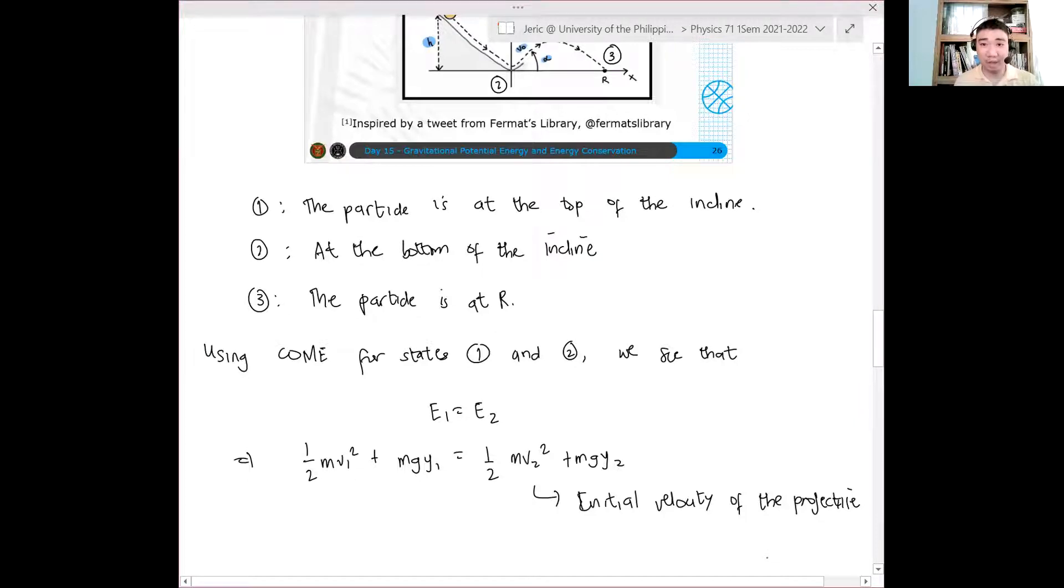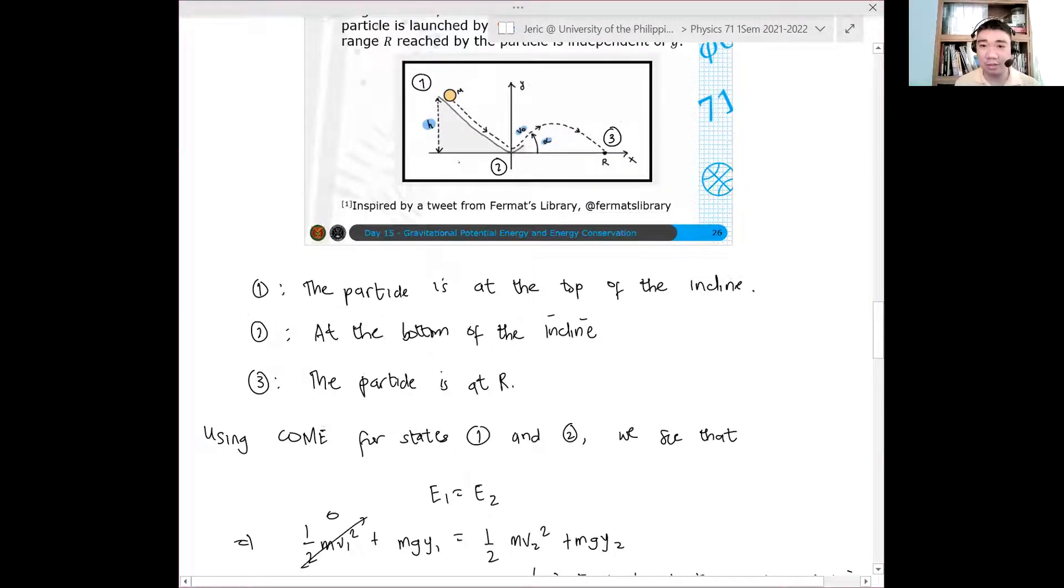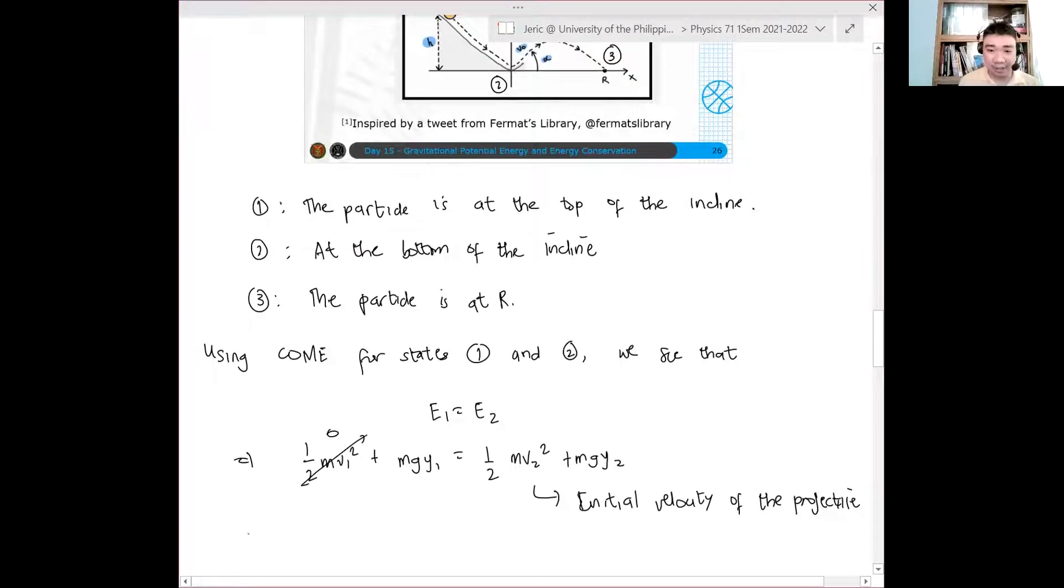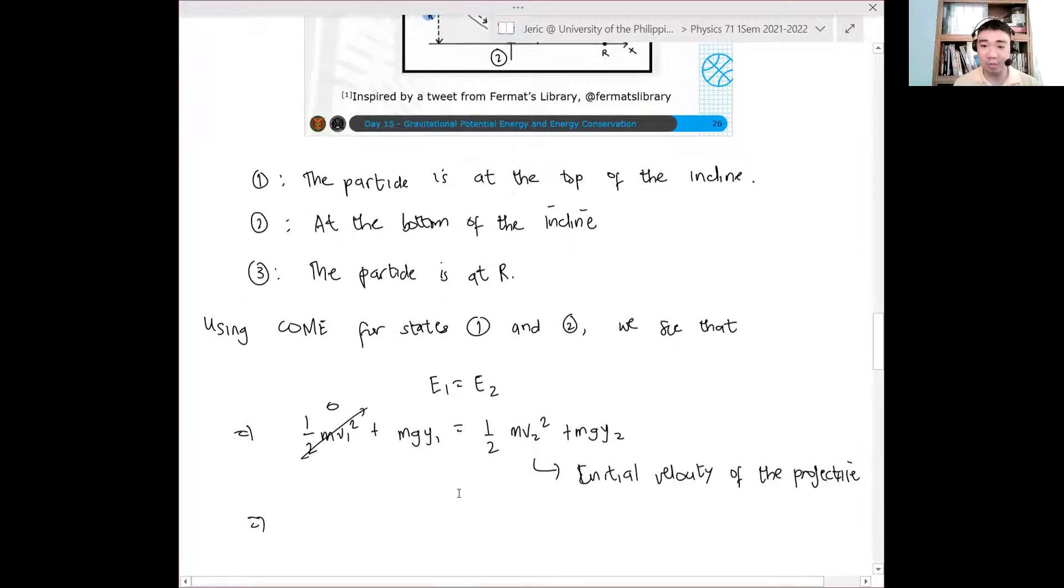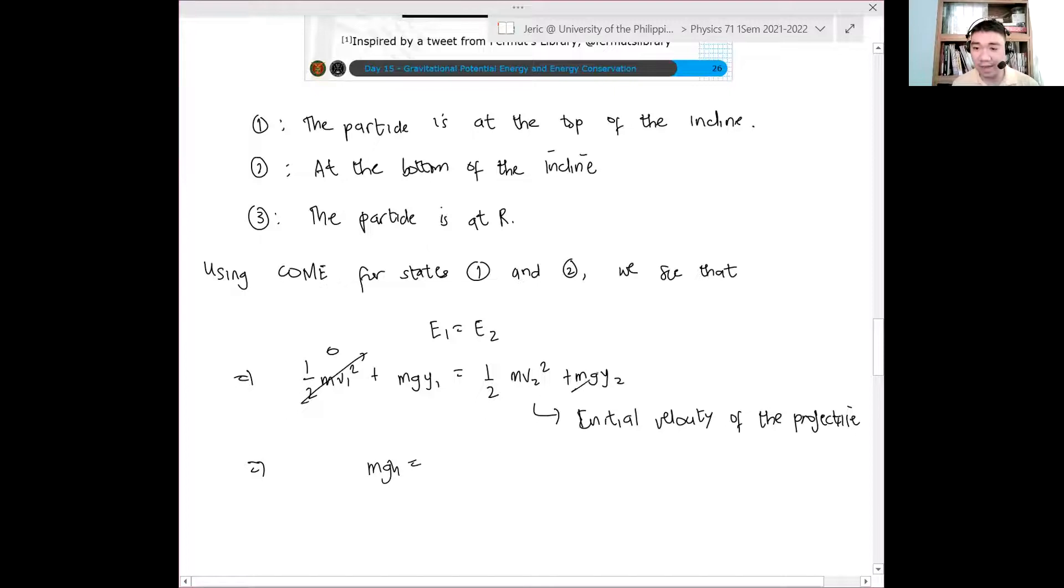So now, what can we say about the initial velocity of the particle? I should say, the velocity of the particle at the top of the incline initially. Gumagalaw ba siya at the top of the incline initially? Obviously, hindi. So this is zero. Therefore, pero what's Y1? Y1 is just equal to H if we will assume that this is zero. So buti na lang yung set up na ng coordinate system dito. So Y equals zero is at the initial position of the projectile. And hence, Y1 now here is just H. Implying that MGH is just equal to what? So this also vanishes by our coordinate system. It's just equal to one-half M V2 squared. Cancel ang M.